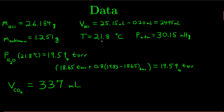The temperature of my solution right after the reaction finished, which we're assuming is the same as the temperature of the carbon dioxide gas produced, for me it was 21.8 degrees Celsius. The atmospheric pressure that I read from the barometer out in the hallway was 30.15 inches of mercury. The vapor pressure of water at my temperature was 19.59 torr. If you look at the table in the lab that I gave you, there is a vapor pressure for 21 degrees Celsius and a vapor pressure for 22 degrees Celsius, which was 19.83 torr.